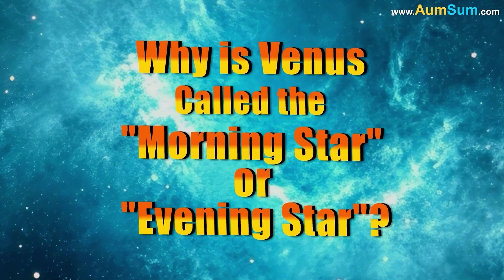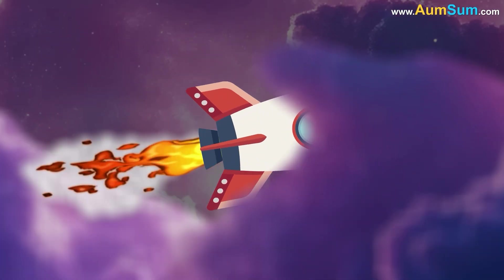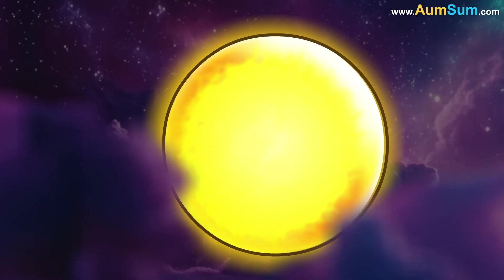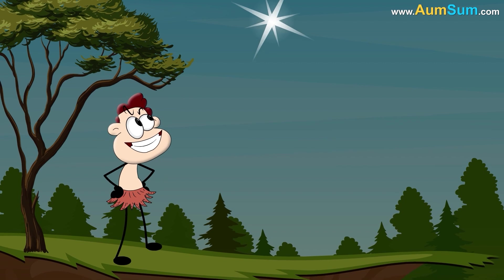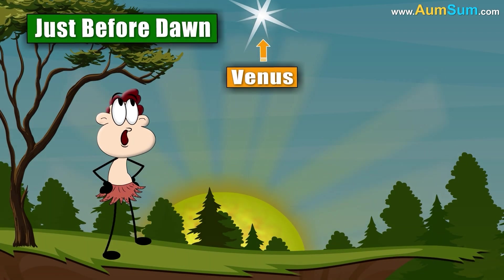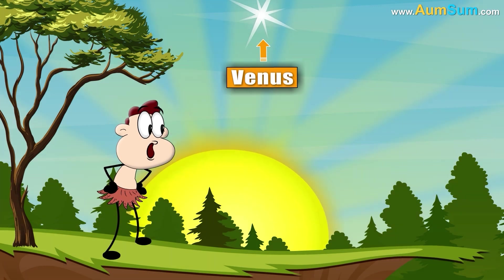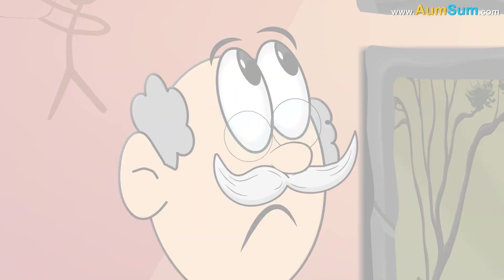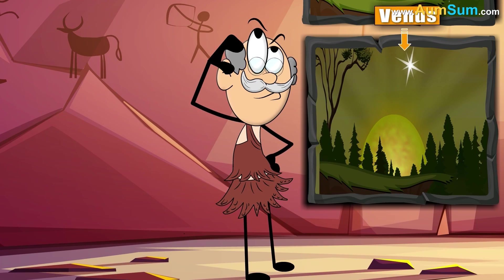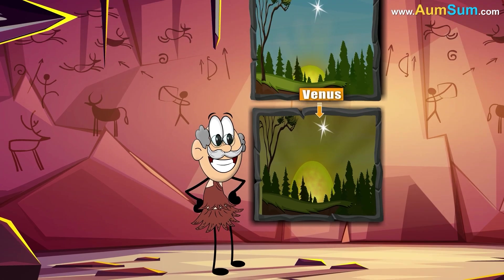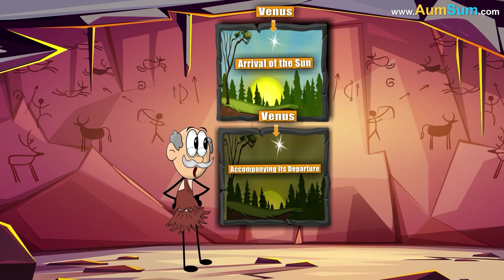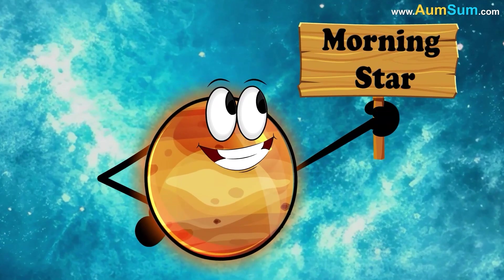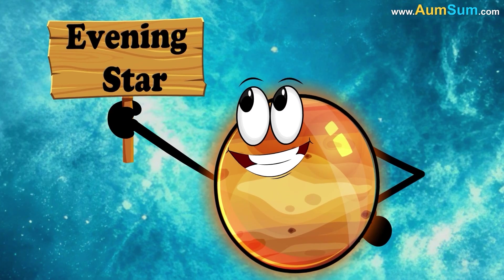Why is Venus called the morning star or evening star? When seen from Earth, Venus is the third brightest natural object in the sky after the sun and the moon. Ancient civilizations noticed that Venus was a regular feature either just before dawn or just after dusk. Because of its striking visibility during these times, they associated it with the idea of a star heralding the arrival of the sun or accompanying its departure. Although Venus is a planet, its behavior and brightness earned it the nickname of morning star or evening star in many cultures.